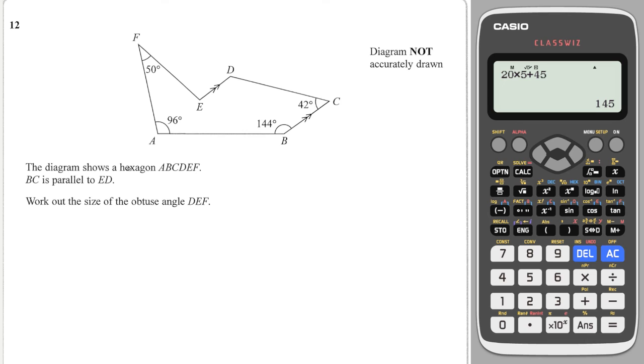Final tricky question. We have a hexagon, and we have two parallel lines. And it says work out the obtuse angle DEF. So we're looking for this angle in here. The first thing I'm going to do is try to work out all the angles inside of a hexagon. Now, I know from my polygon rules that the number of sides minus 2 times by 180 is the total interior angles. A hexagon has six sides, so 6 minus 2 times 180 gives me a total of 4 times 180, which is 720.